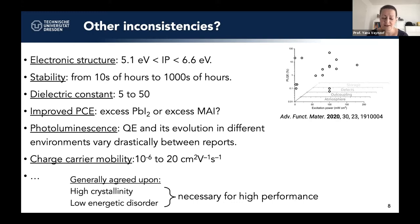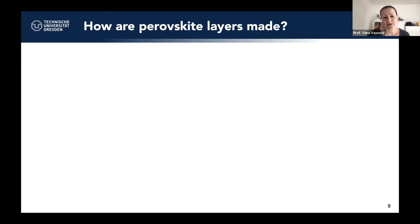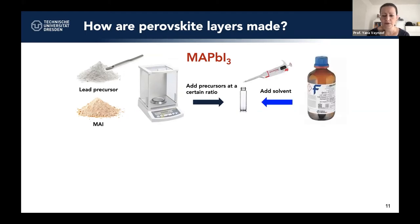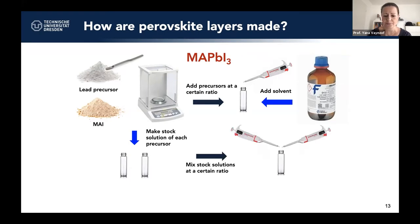What we do generally agree on is that high crystallinity and low energetic disorder are necessary for high performance. We decided to go back to the basics and understand why there is this variation — specifically, how are these layers even made. Starting with MAPbI3, the model system: you have a lead precursor and MAI, you weigh them and add them at a certain ratio into your vial, then add DMF as the solvent, and your precursor solution is ready. Alternatively, you make stock solutions of each precursor separately and mix them at a certain ratio.